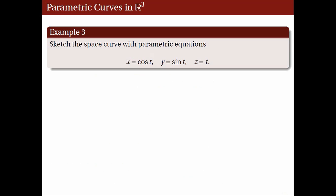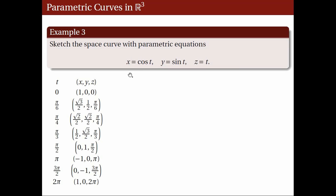Let's have another example. Consider the parametric equations x equals cosine t, y equals sine t, and z equals t. The domain of the cosine and sine functions is the set of real numbers, so here t is allowed to take on any real number. Let's substitute some special values. When t equals pi over 6, we get x equals cosine pi over 6, or square root of 3 over 2; y equals sine pi over 6, or one-half; and z equals pi over 6.